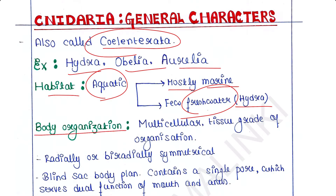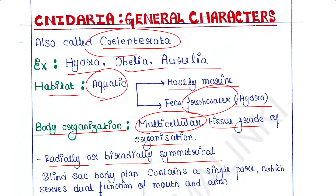Body organization: they are multicellular animals and they have a tissue grade of organization. A number of cells are present in their body, which are organized into different tissues. The body is radially or bi-radially symmetrical.